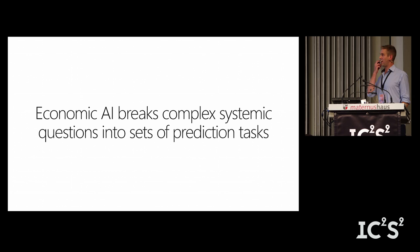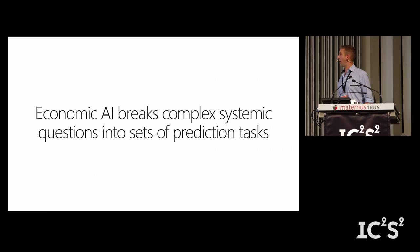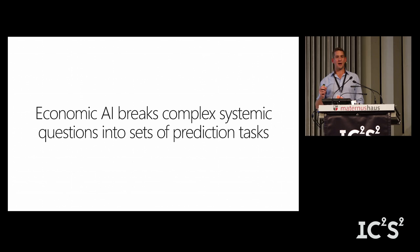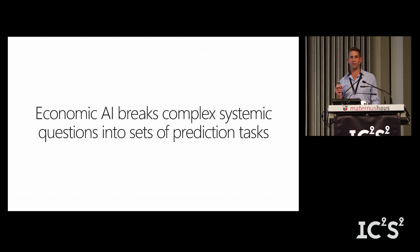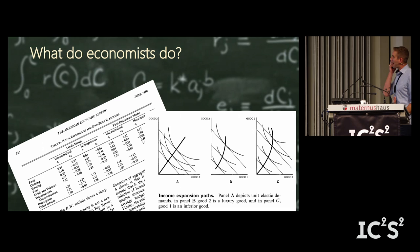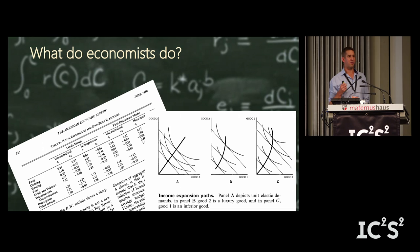I'm going to talk about Economic AI. One of the advantages of AI is that nobody really knows what it means — you just get to define it however you want. For today, I'm going to define AI as breaking complex systemic questions into simple sets of prediction tasks — specifically, tasks that can be attacked with off-the-shelf arbitrary machine learning.